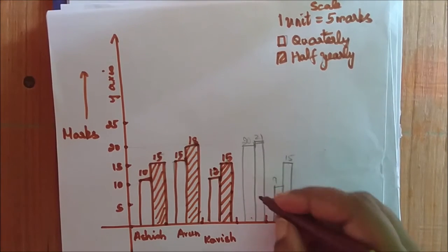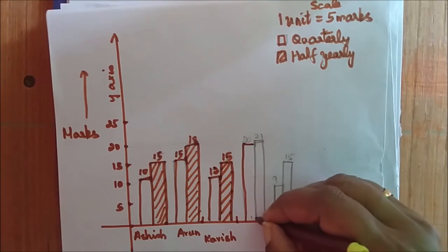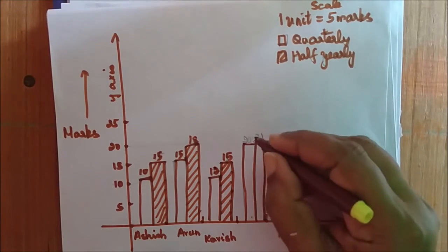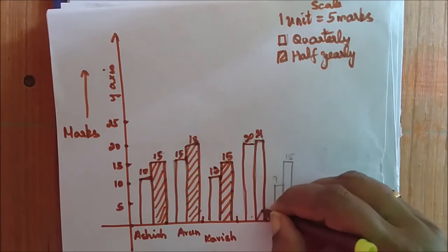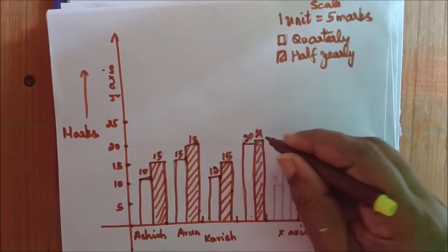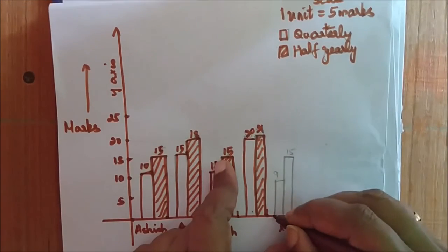Similarly, we will draw the next student. Who is it? It is Maya. How many marks has she scored? She has scored 20 in quarterly and 21 in half-yearly. Since there is very little difference, the change in the diagram is very minimal.